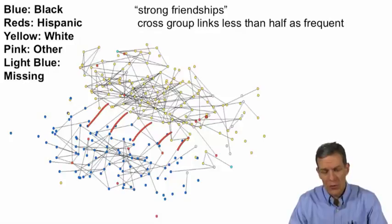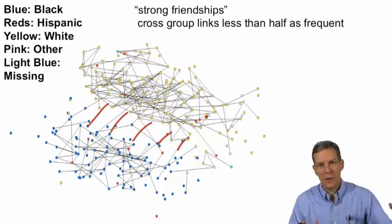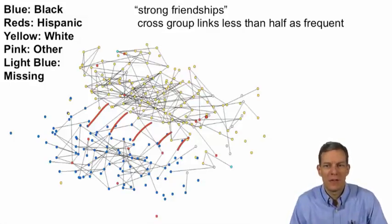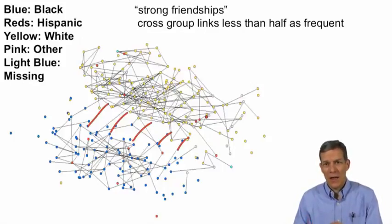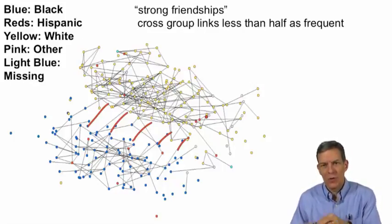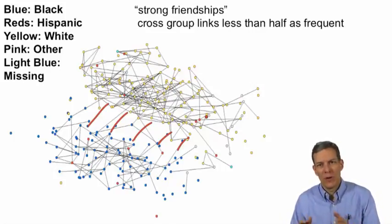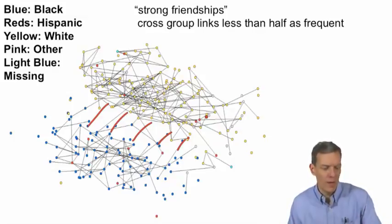So what we've talked about is a series of different ways of representing and characterizing networks, along with a little bit about dynamics and strength of ties. The next thing we're going to look at is zooming in on particular nodes and talking about what their position in a network is, which will also be important in understanding things like diffusion, contagion, and how people behave.